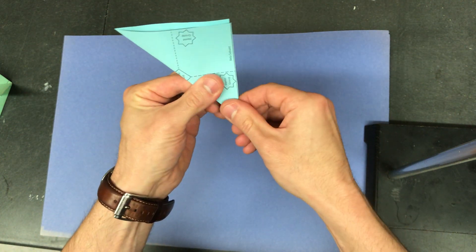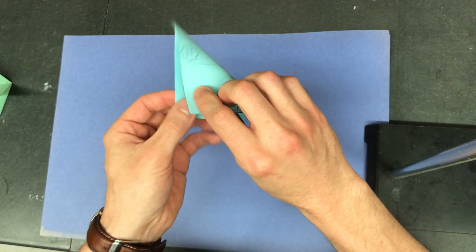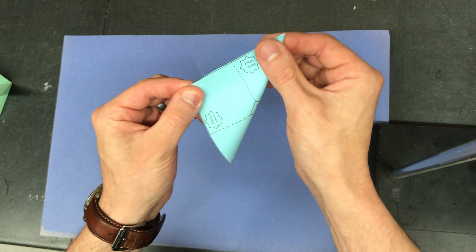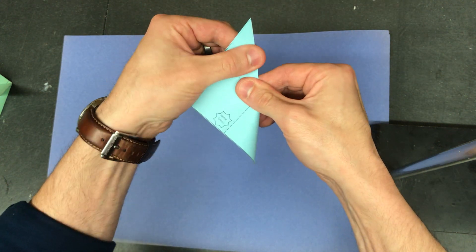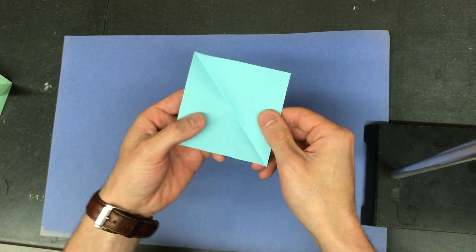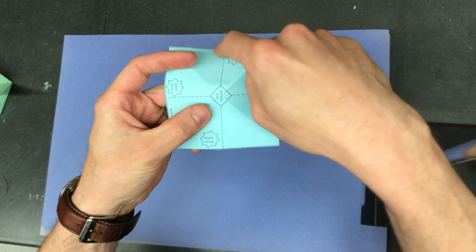You can do it as neatly as you can. Then you're going to open it up and fold it the other way as a triangle. Okay, then you're going to flip it over, and there's some dotted guidelines here.